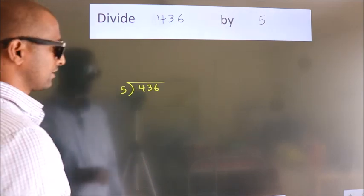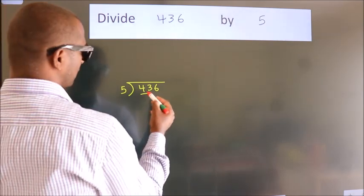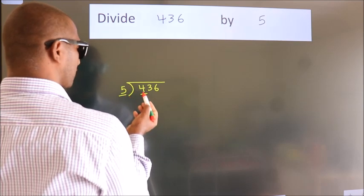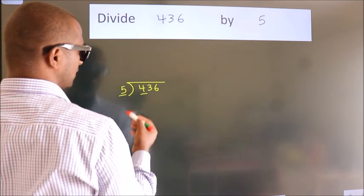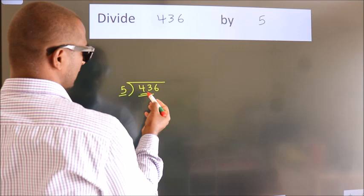Next. Here we have 4. Here 5. 4 smaller than 5. So we should take 2 numbers. 43.